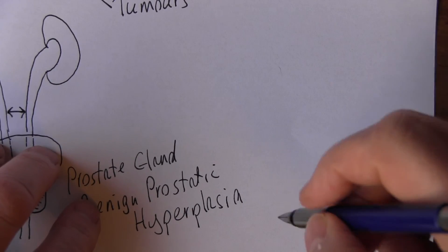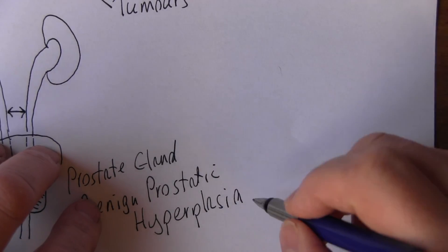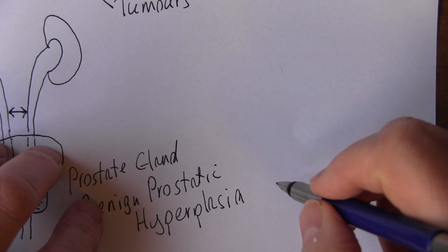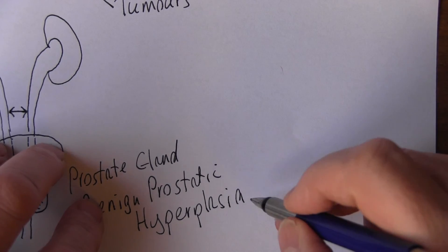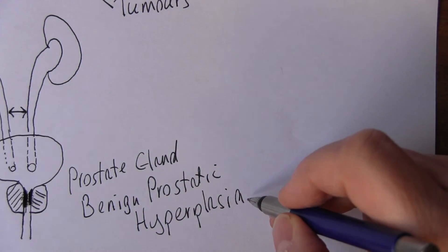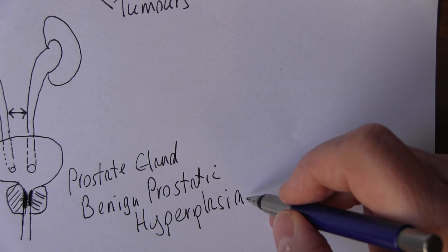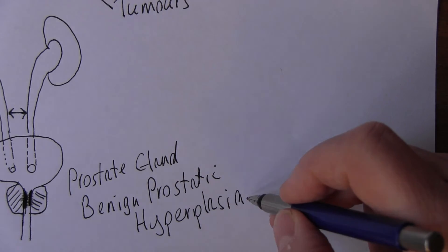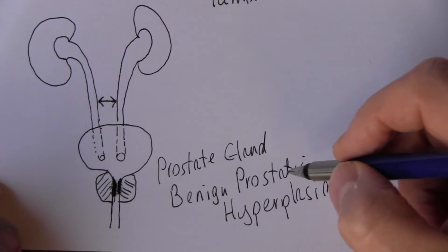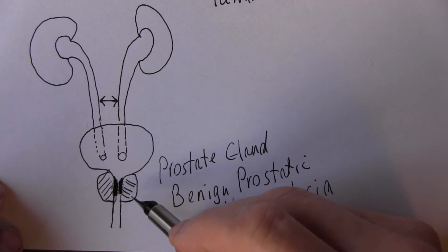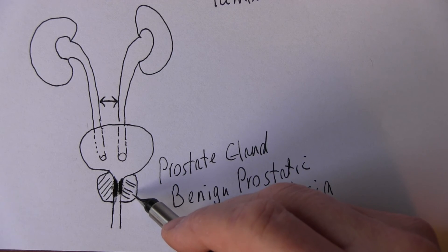Hyperplasia is an increase in the number of cells present — it's not a hypertrophy, which would mean the cells get bigger. The testosterone causes excessive mitotic activity in these cells. It can be malignant of course — you can get malignant problems in the prostate as well.